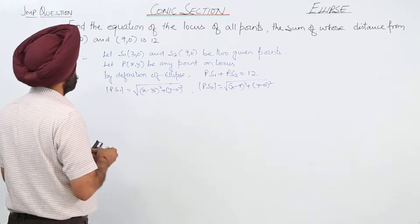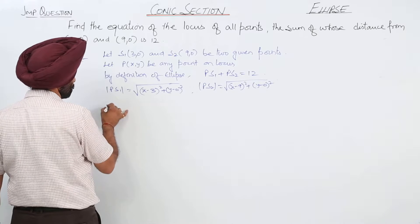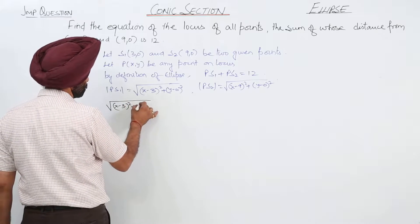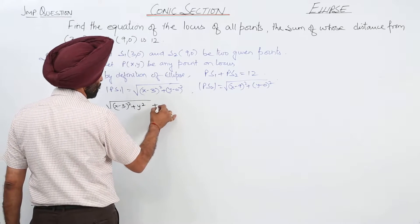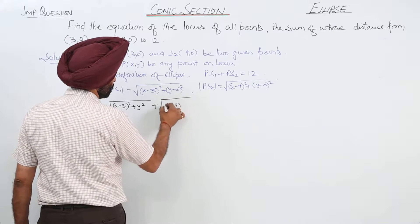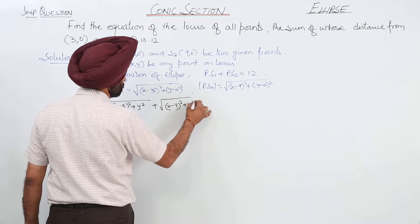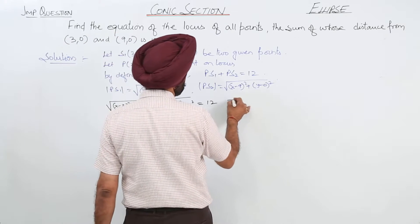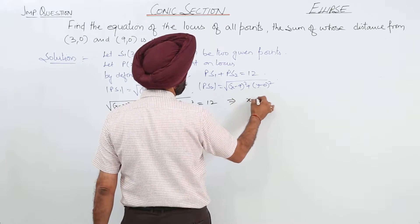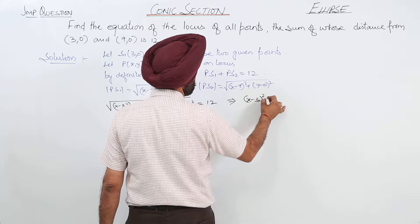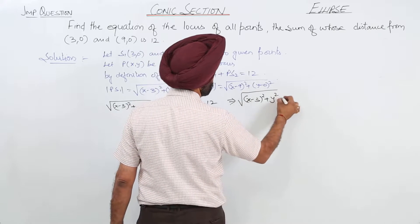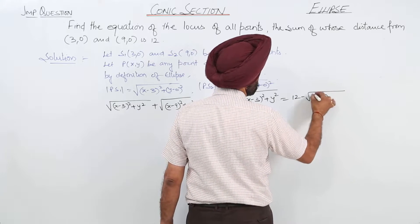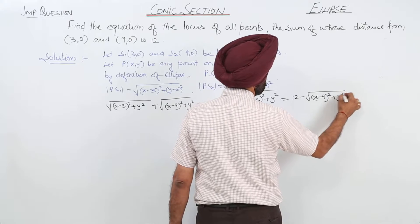Substituting this, we get: square root of (x minus 3) whole square plus y square, plus square root of (x minus 9) whole square plus y square is equal to 12. We can further write it as: square root of (x minus 3) whole square plus y square is equal to 12 minus square root of (x minus 9) whole square plus y square.